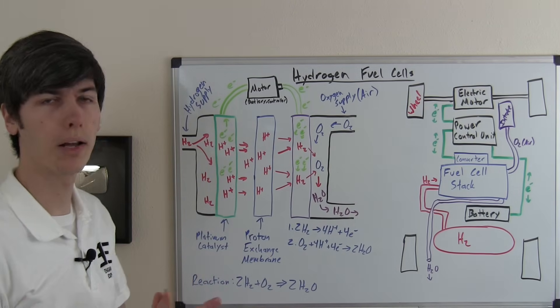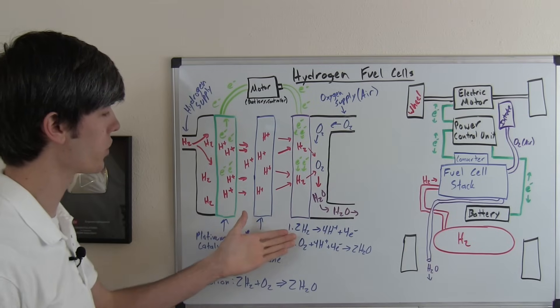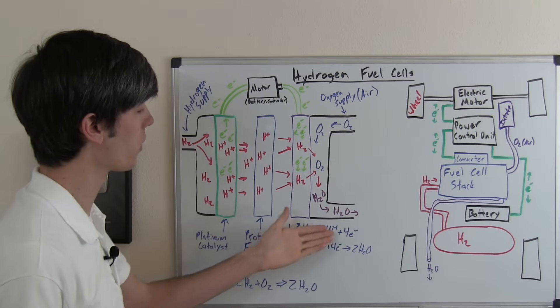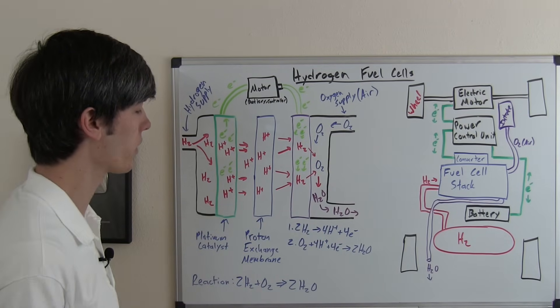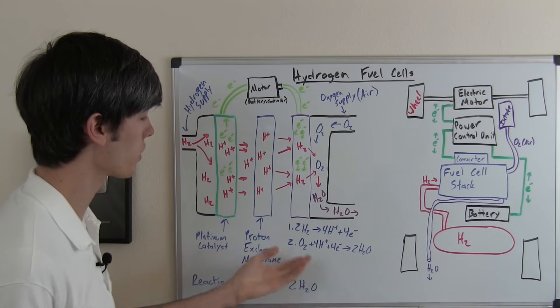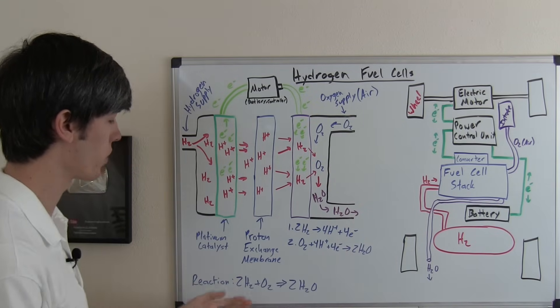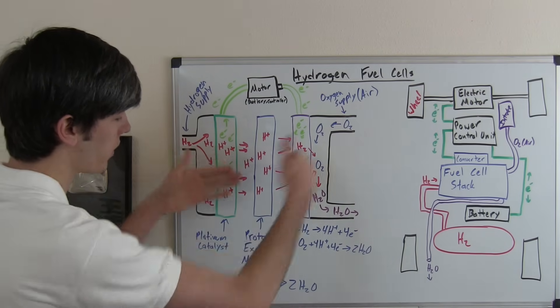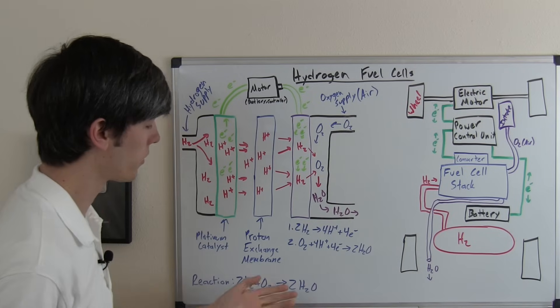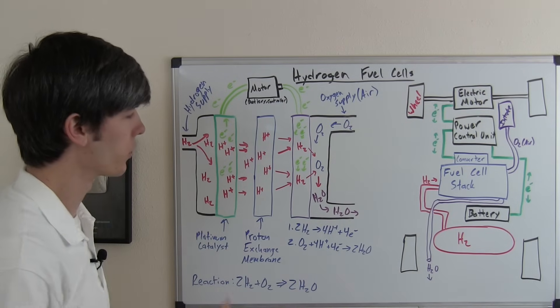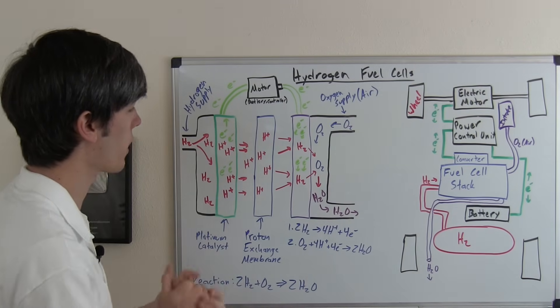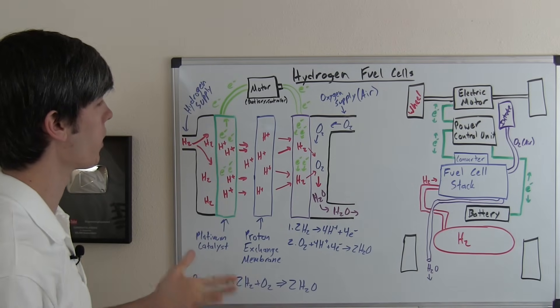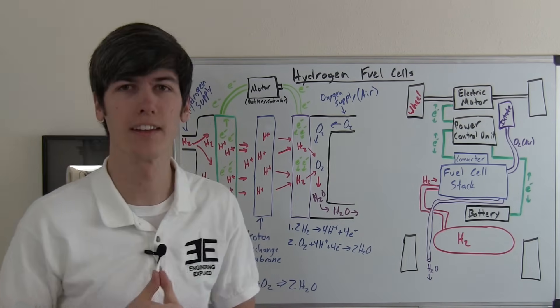So what the overall process here looks like is we have the two H2s, which go on to form 4H plus and 4E minus. Now these products of this reaction combine with O2 to then form H2O. So the overall reaction is we have two H2s plus O2 on the left side. And then our product is simply 2H2O. So the only byproduct of this reaction is water, which will be coming out of the tailpipe of the car in this case.